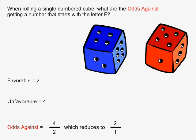Odds against is equal to unfavorable over favorable, which in this case is equal to 4 over 2, and this reduces to 2 over 1.